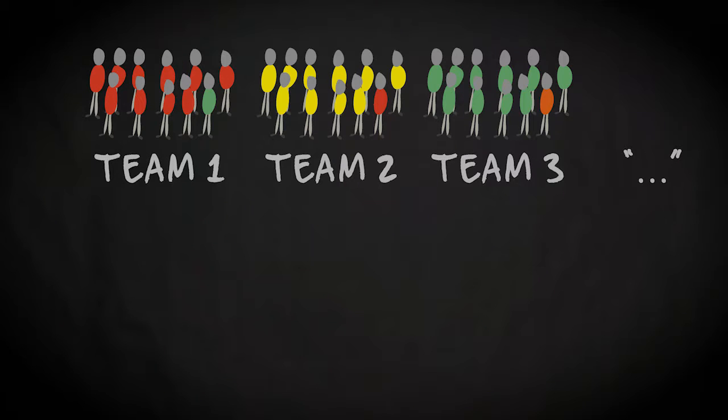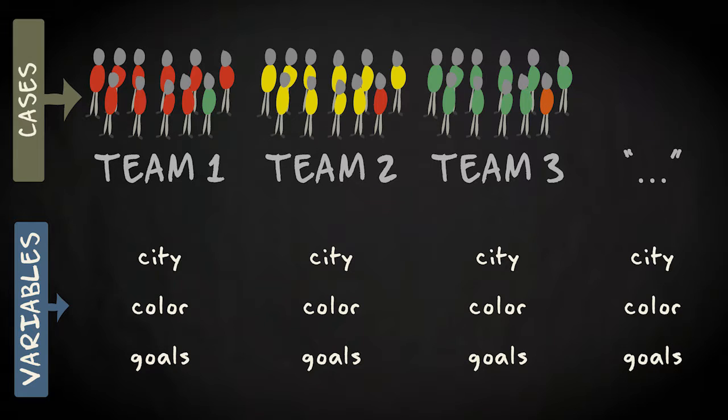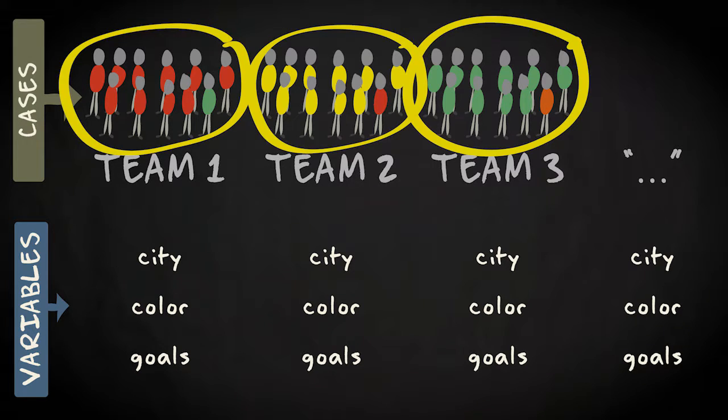Another example. It could be the case that you are not so much interested in the features of individual players, but in the features of the teams these individuals play for. For instance, you might want to know about every Spanish team in which city it is based, what the main colors of the shirts are, and how many goals the team scored in the last year. These features are variables again. However, the cases here are not individual football players, but the teams these individuals play for.